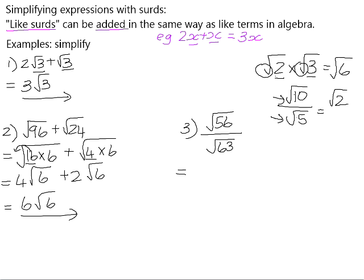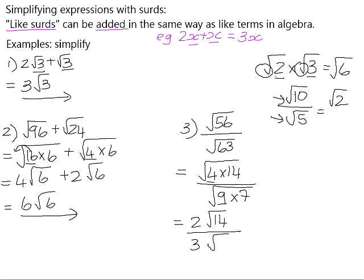Okay, number 3. Before we simplify the fraction, let's simplify the surds. 56 is the product of 14 times 4. So it's the square root of 4 times 14. And the square root of 63 is 9 times 7. So remember, again, the goal is you want to find a perfect square that you multiply. So that gives you 2 square root 14 over 3 square root 7.